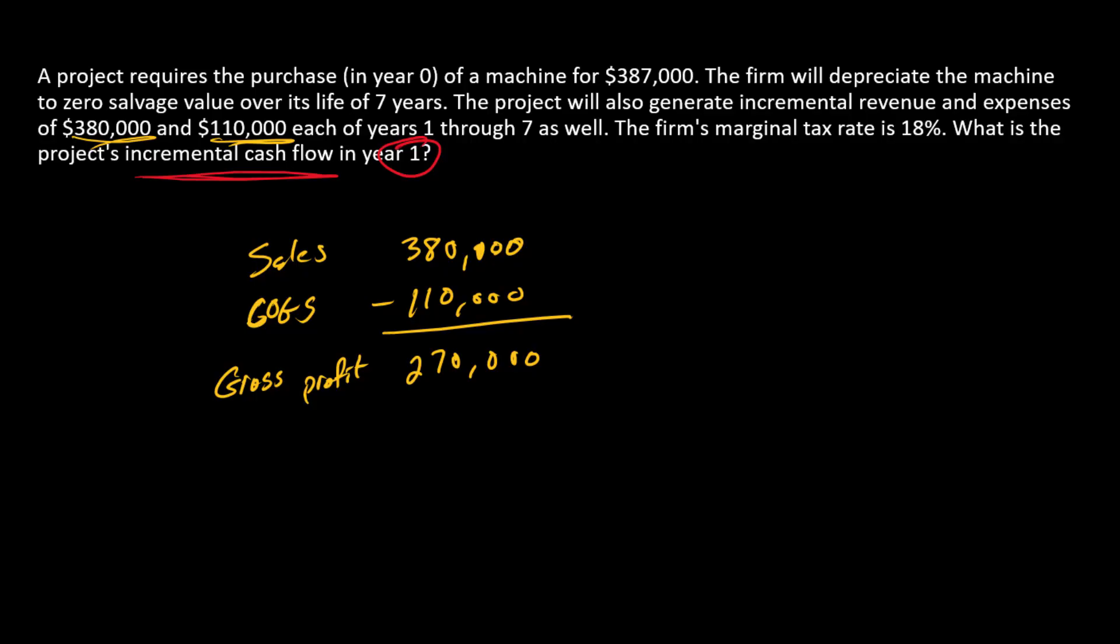Now we need to go find depreciation. So here we know that we are going from $387,000 as the purchase price of the machine all the way down to zero. So we're going to fully depreciate this over seven years. And so the annual depreciation amount is $387,000 divided by seven, and what do we have? We have $55,286 per year.